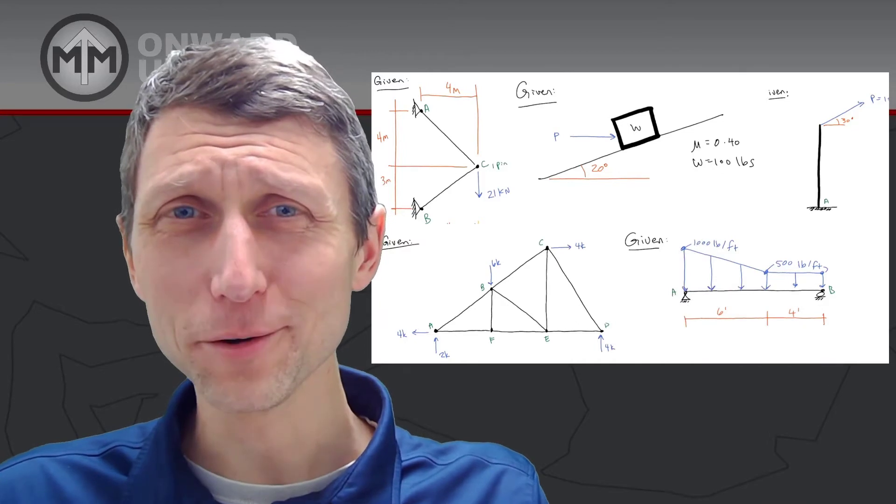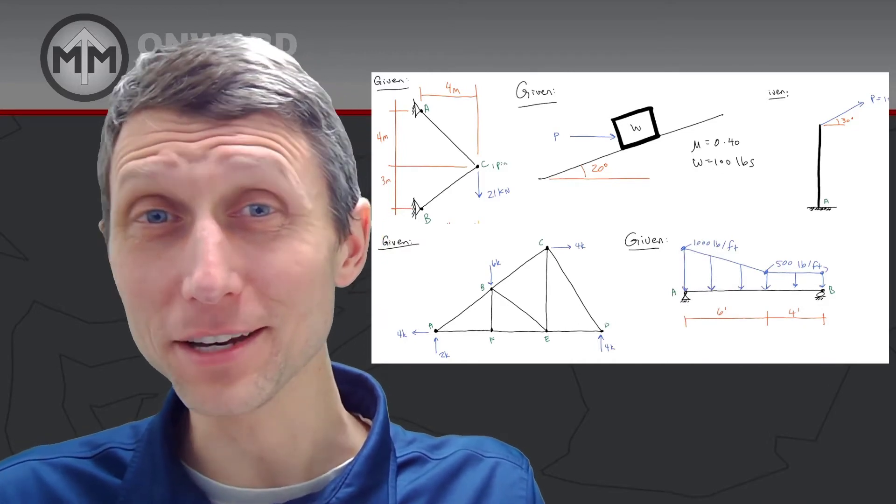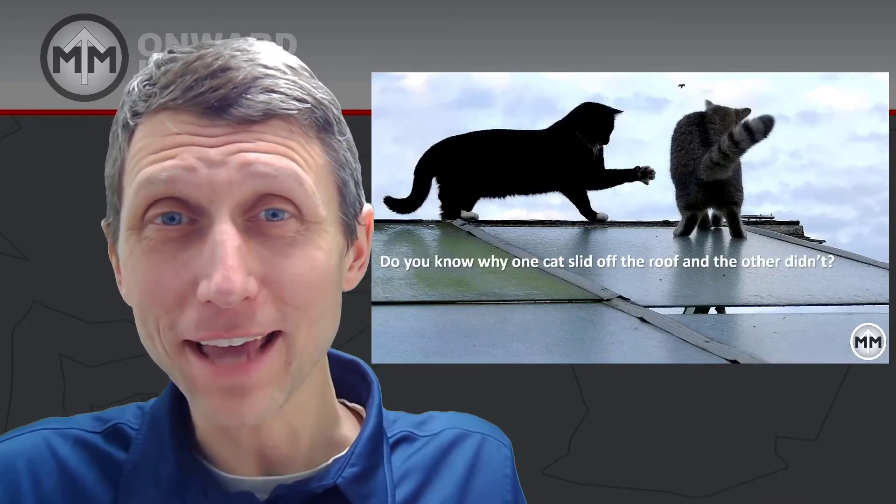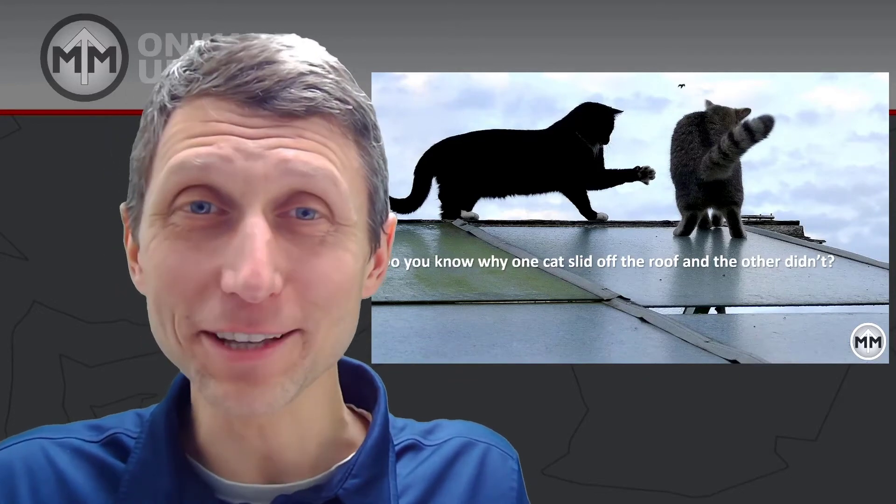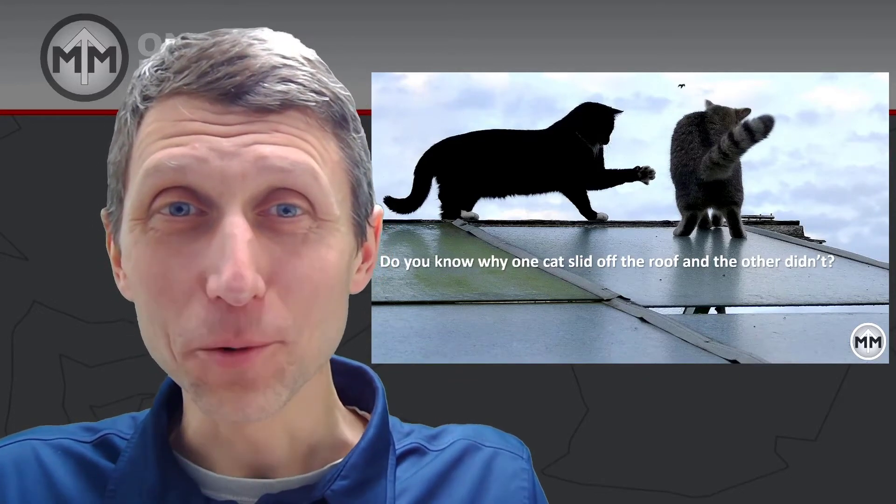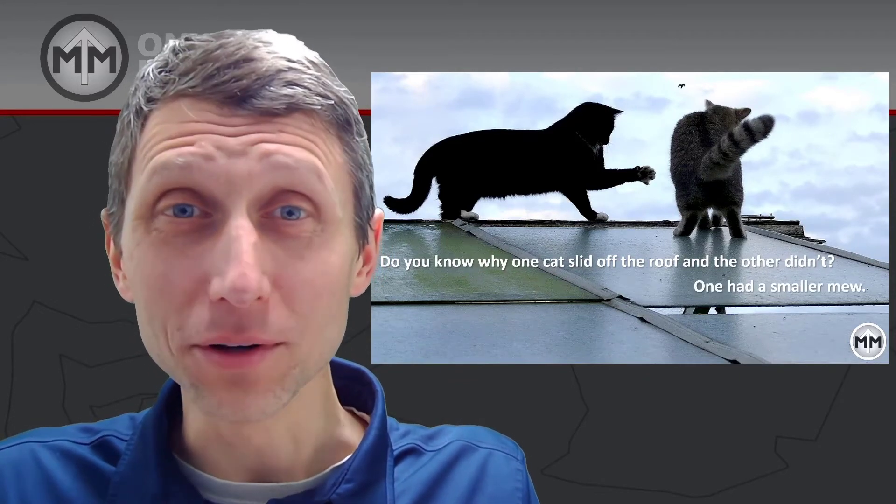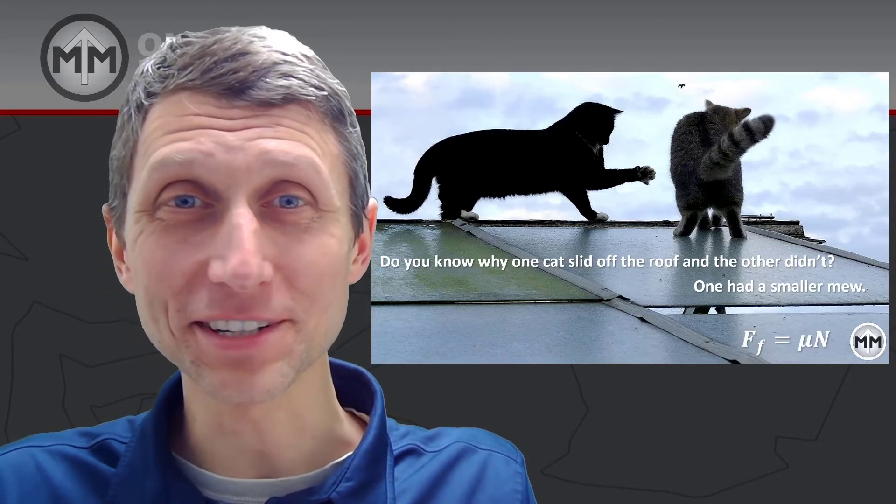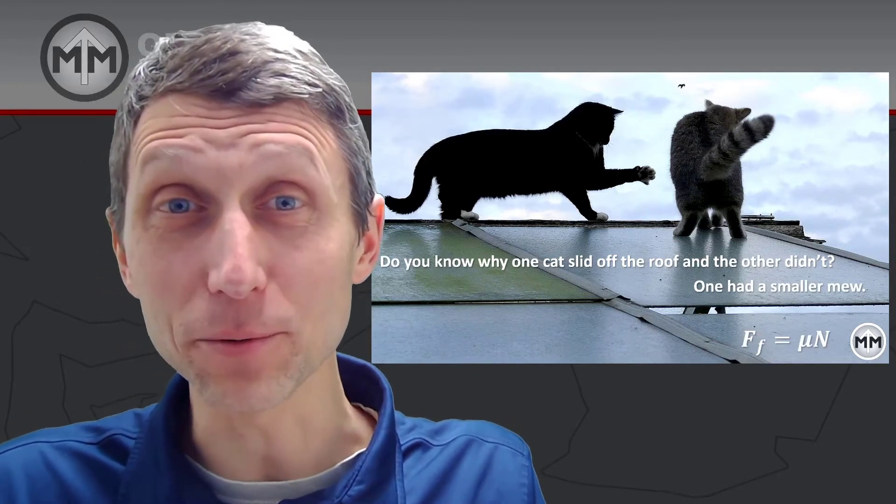And speaking of friction, maybe you'll have more time once you pass the FE to tell more jokes. Because you could ask somebody, do you know why one cat slid off the roof and the other didn't? Well, one had a smaller mu. The friction force is mu times the normal force. You have to tell another engineer that one.